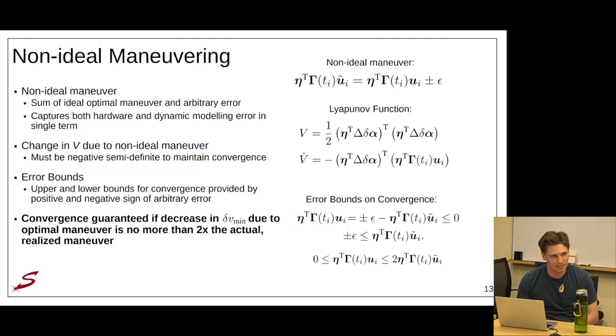But as we know, spacecraft do not maneuver ideally. There's always some form of error. So let's consider an arbitrary error applied to this ideal optimal maneuver. And in this way, capture both forms of hardware and dynamic modeling error within a single term. The change in V to a non-ideal maneuver must be negative semi-definite to maintain the convergence properties we proved for ideal control. And with this arbitrary error, we can establish generic error bounds on the error that provide guarantees of convergence, both in the positive and negative sign of the arbitrary error. You can find the convergence is guaranteed if the decrease in the delta V minimum due to an optimal ideal maneuver is no more than two times the actual realized maneuver.